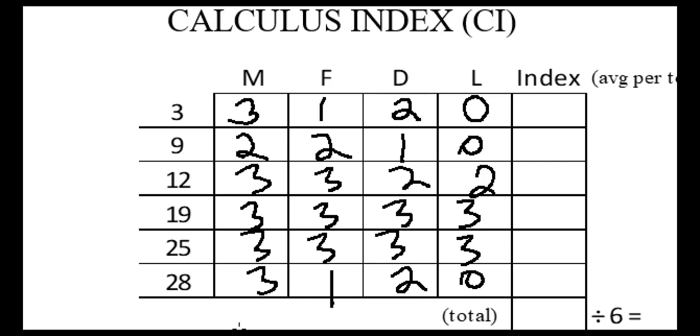The next step is going to be to get an average per tooth. So here you can see it's asking us to get an average per tooth, which is going to be in these boxes. I need to add up all four surfaces and then divide by four and get an average here. And that's going to be 1.5 for that tooth.